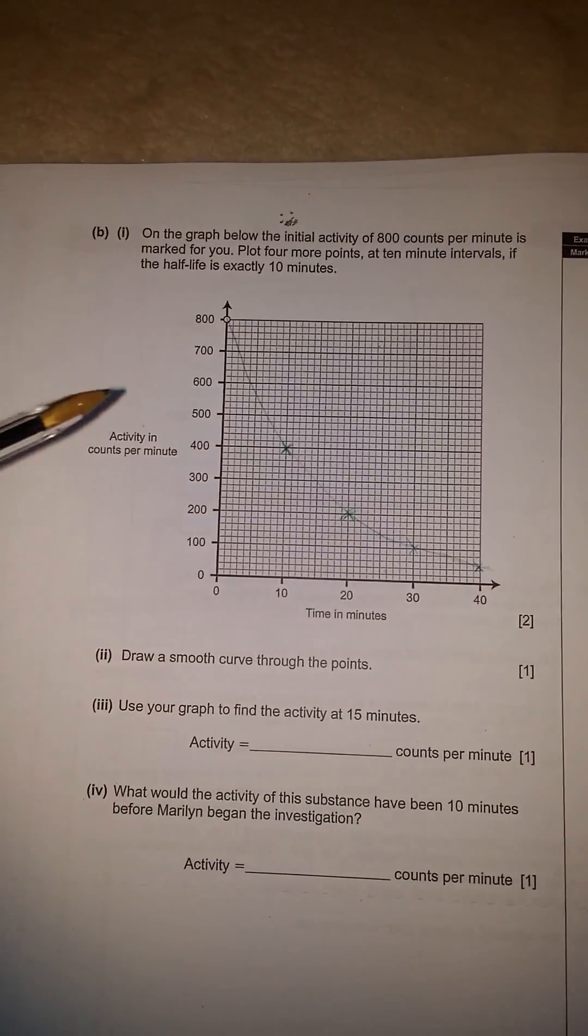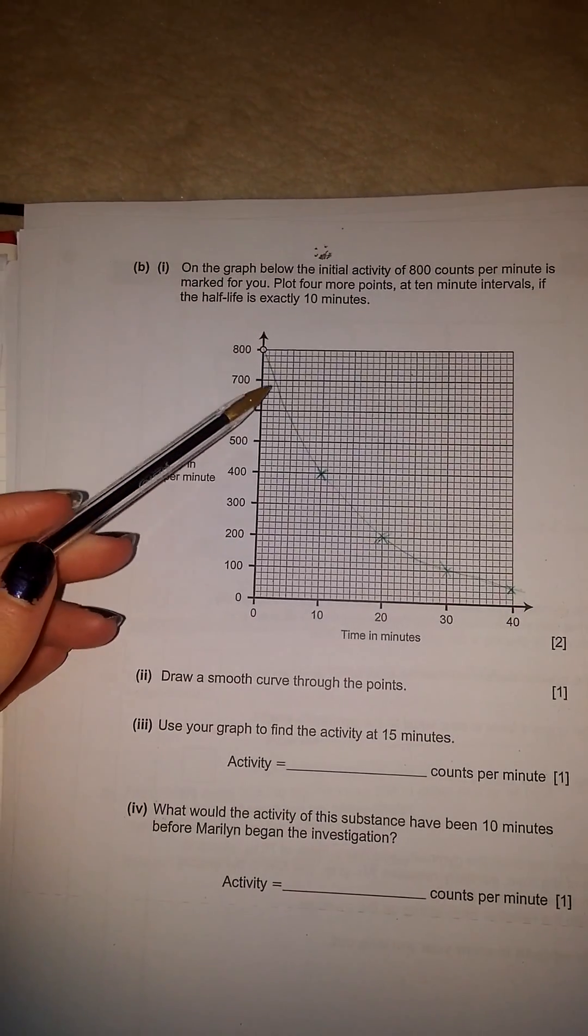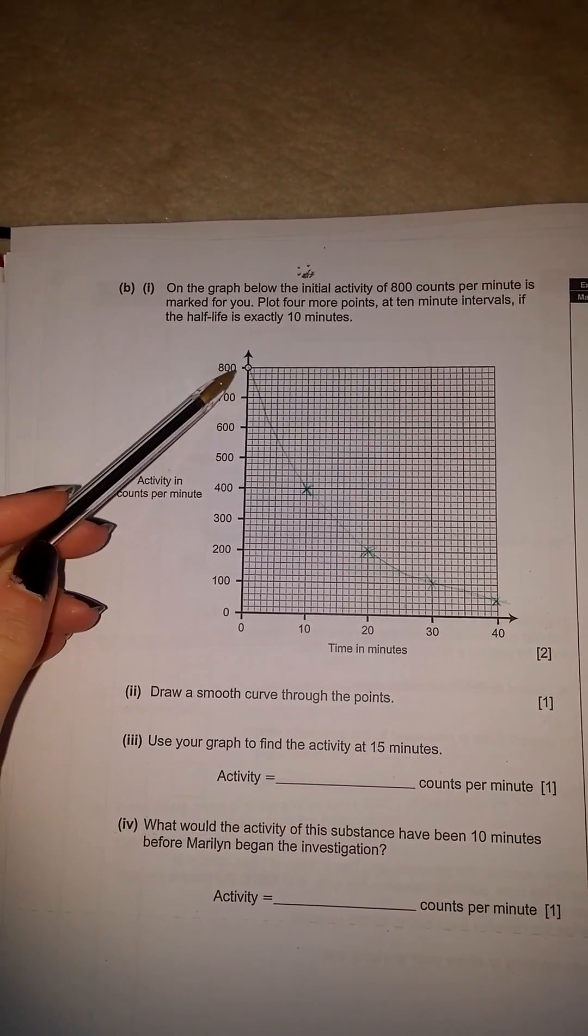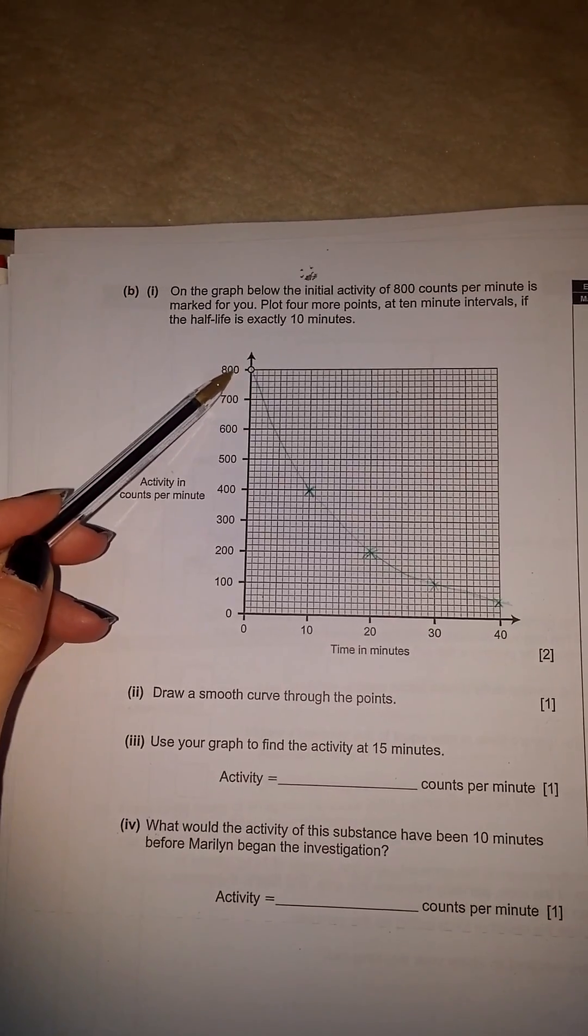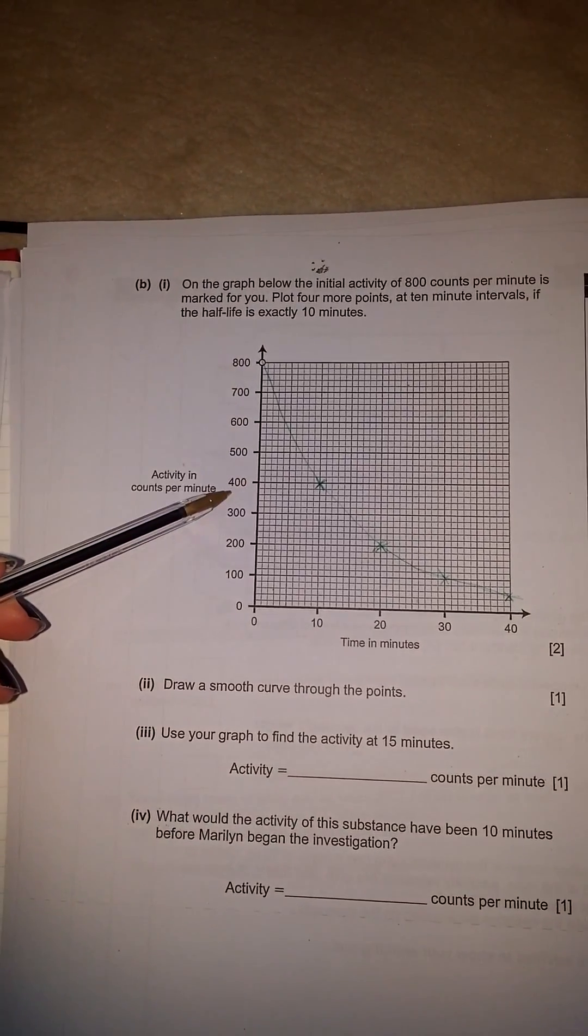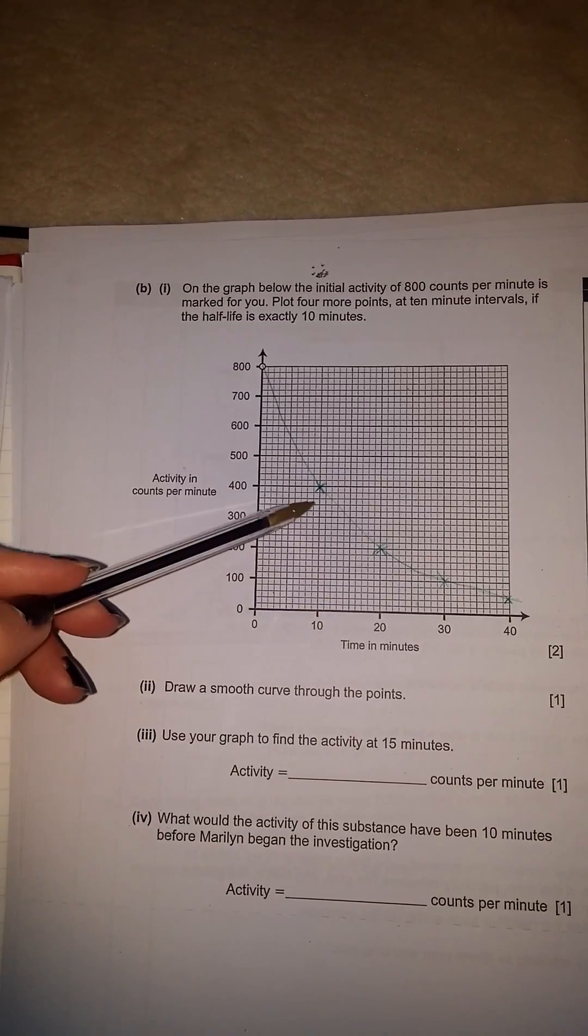So what that means is, if the half-life is 10 minutes, if my initial activity is 800, 10 minutes after it should divide by half, so 800 divided by 2 is 400. So once 10 minutes has passed, it should be at 400.